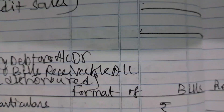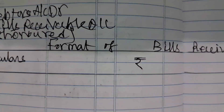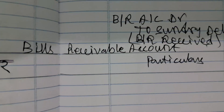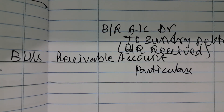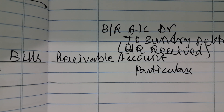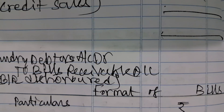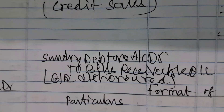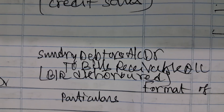There are two entries which are very important in the Total Debtors Account. First, if bills receivable are received: Bills Receivable Account debit to Debtors Account — posted on the credit side. Second, the reversal entry if bills receivable is dishonoured: Sundry Debtors Account debit to Bills Receivable — posted on the debit side.